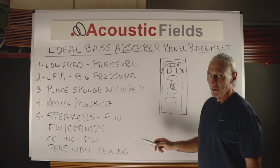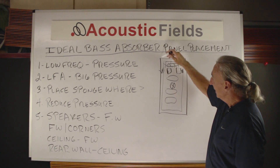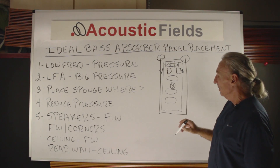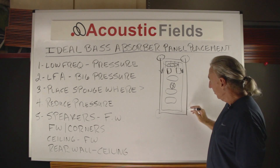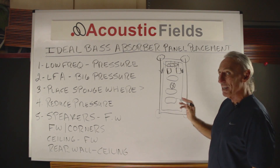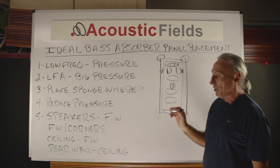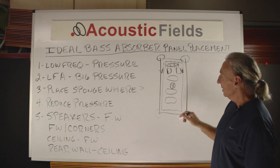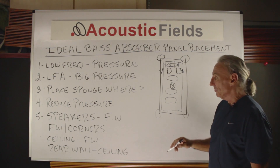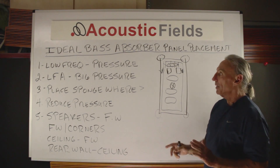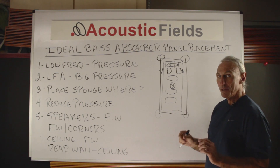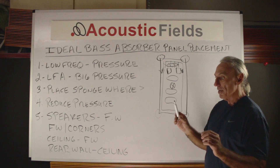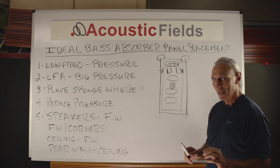The corners in the front wall are the next high pressure area, so that's a placement area we want to look at. The corners in the back are also important, but not as important as the two front wall corners. The rear wall to ceiling junction is another issue. We always want to place our low frequency absorption management technology in the areas where pressure is the highest.